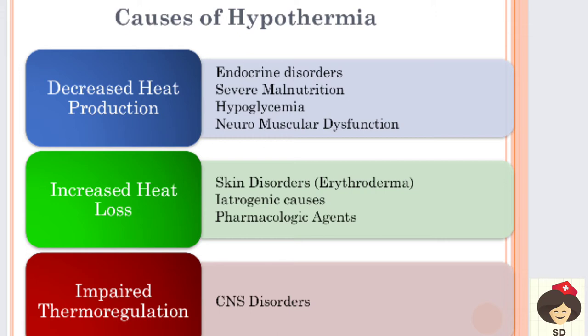Iatrogenic cause is nothing but the cause induced by the physician. Some treatments done to cool the body temperature, when over-treated, can cause increased heat loss. Pharmacological agents - certain medications can also cause increased heat loss. Next is impaired thermoregulation. The hypothalamus is responsible for regulating temperature, and when there is impaired thermoregulation due to CNS (central nervous system) disorders, the patient can go for hypothermia.